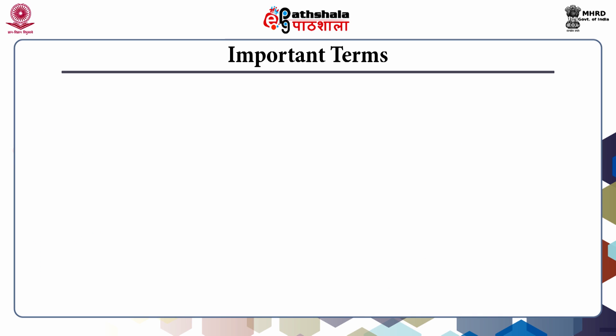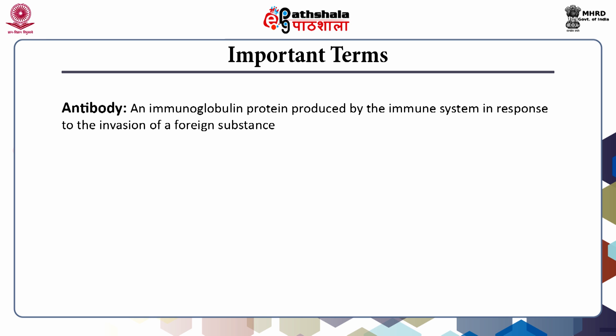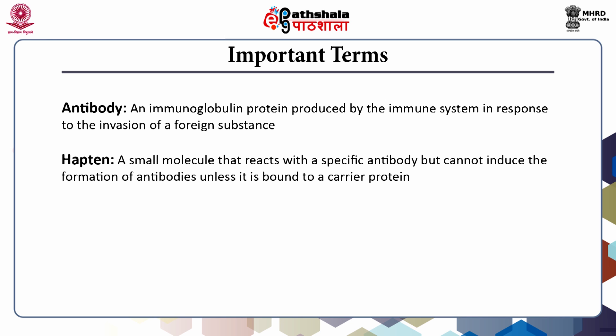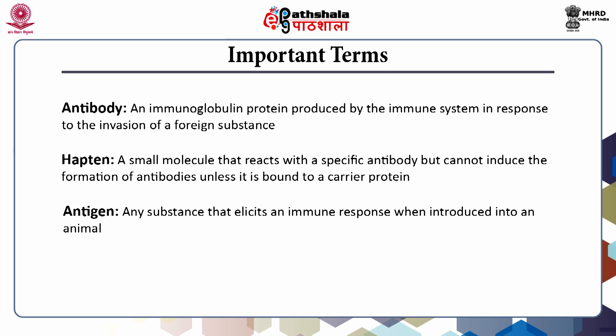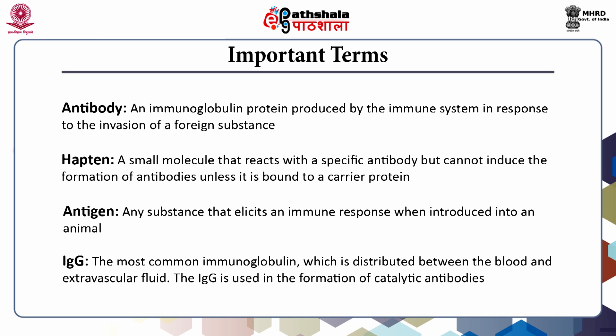Let's start with some important terms. An antibody is an immunoglobulin protein produced by the immune system in response to the invasion of a foreign substance. A hapten is a small molecule that reacts with a specific antibody but cannot induce the formation of antibodies unless it is bound to a carrier protein. An antigen is any substance that elicits an immune response when introduced into an animal. IgG is the most common immunoglobulin, distributed between the blood and extravascular fluid, and is used in the formation of catalytic antibodies.